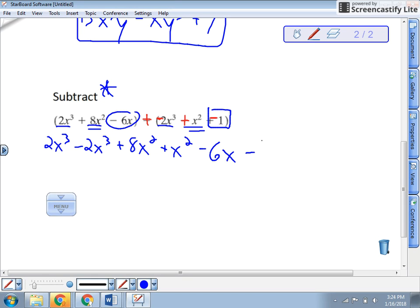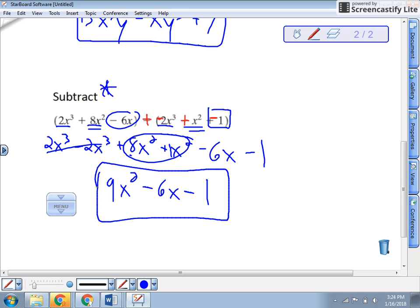Now combine like terms and you're done. So 2x squared minus. That actually cancels out. 0x cubed. But that's just 0. I've got my 8x squared plus x squared. 8x squared plus 1x squared. So that would actually be 9x squared. I've got my minus 6x minus 1. Can't combine those. And there you go. That's how you add and subtract polynomials.